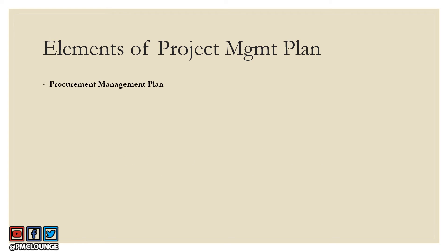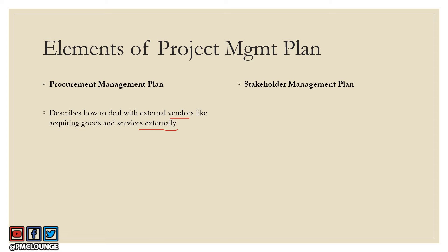The procurement management plan is the output of the plan procurement management process. This document describes how to deal with external vendors — acquiring goods and services externally. No matter how large your organization is, you may need external vendors to provide services in order to complete your project, and this plan defines the process for how you're going to deal with them.